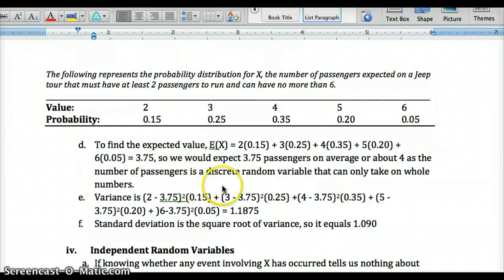So here's an example of finding expected value. Here we have a number of passengers on a jeep tour and the probability based on past data of how likely it is to have a certain number of passengers. So you multiply the number, which is x would be the number of passengers here, times its probability. You sum those together, so we'd expect about three and three quarters passengers, or about four. And keep in mind, this is discrete because you can only take on whole numbers. Now the variance is calculated down here. Remember, we're subtracting, we're using this mean we got, 3.75. Subtracting each value from that, squaring it and multiplying it by the probability. We add those up to get 1.1875. And then the standard deviation is always the square root of the variance. So the square root of that number is 1.090. So refer back to this if you get stuck on how to calculate those.